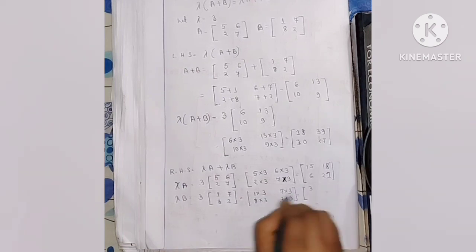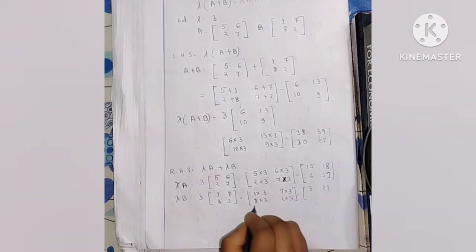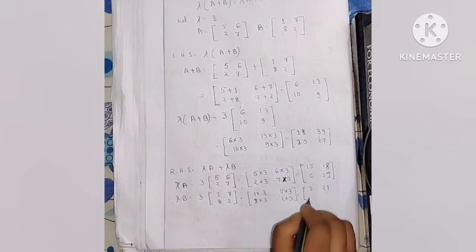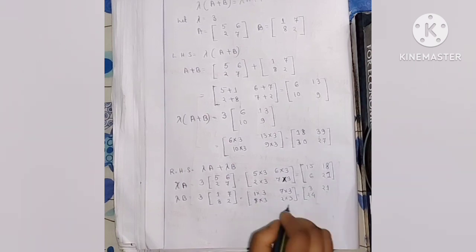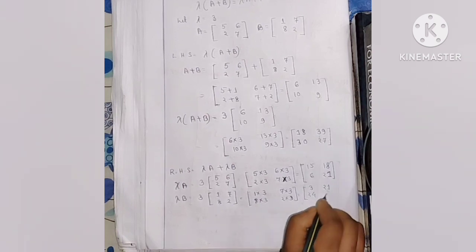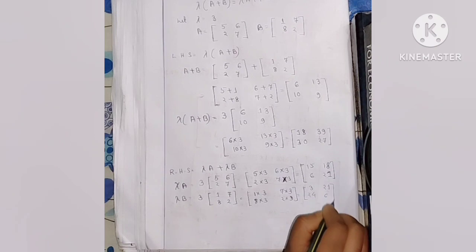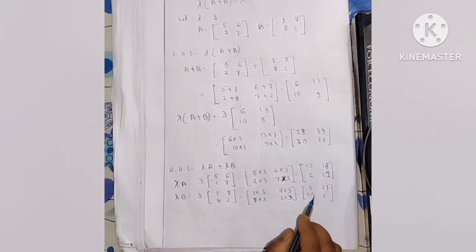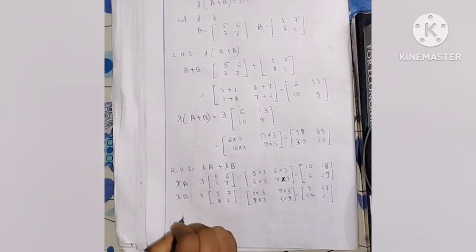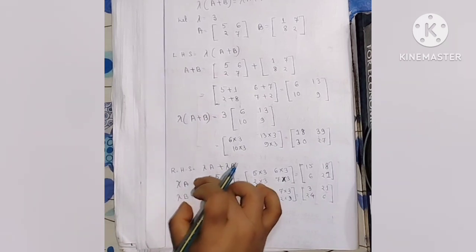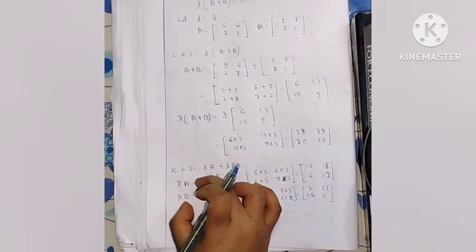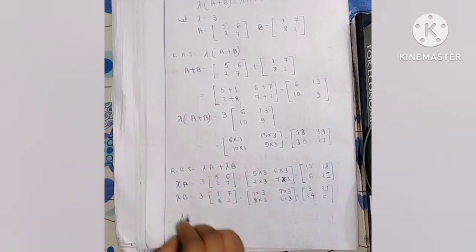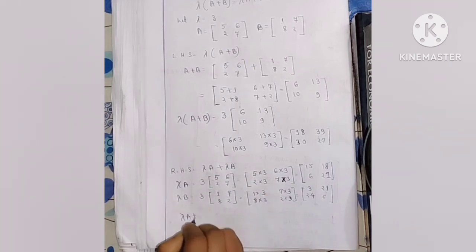Lambda B gives us [3, 21; 24, 6]. So we have lambda A equals [15, 18; 6, 21] and lambda B equals [3, 21; 24, 6]. Now we add these two matrices together: lambda A plus lambda B.